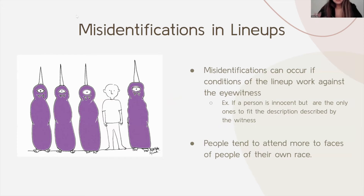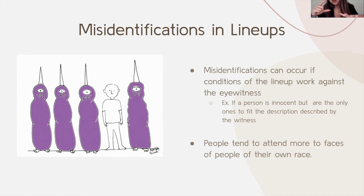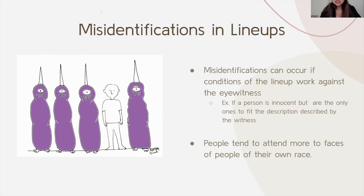Now we're going to talk about misidentifications in lineups. Misidentifications can occur when conditions of the lineup work against the eyewitness. For example, if none of the people in the lineup fit the witness's description except for one person, but that one person is innocent, it is still likely for that person to be picked as the perpetrator because they are the only one who fits the description. Additionally, people tend to attend more to faces of people of their own race, meaning white people will be more likely to correctly identify white people, and black people will be more likely to correctly identify black people.